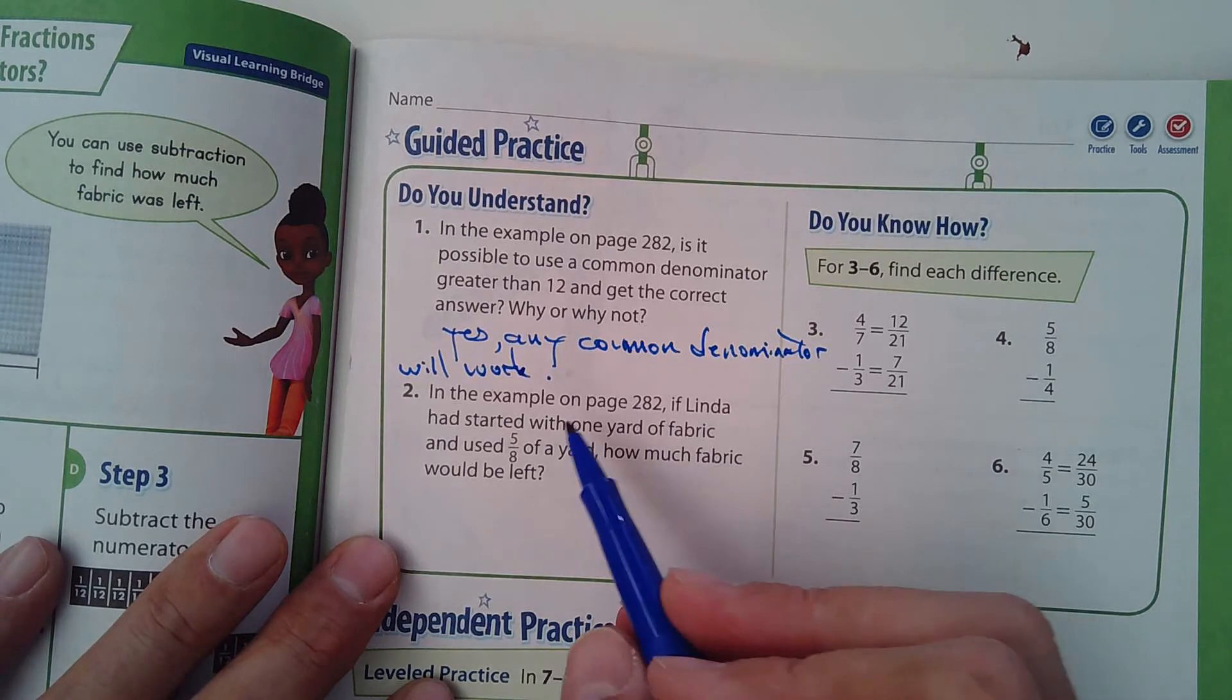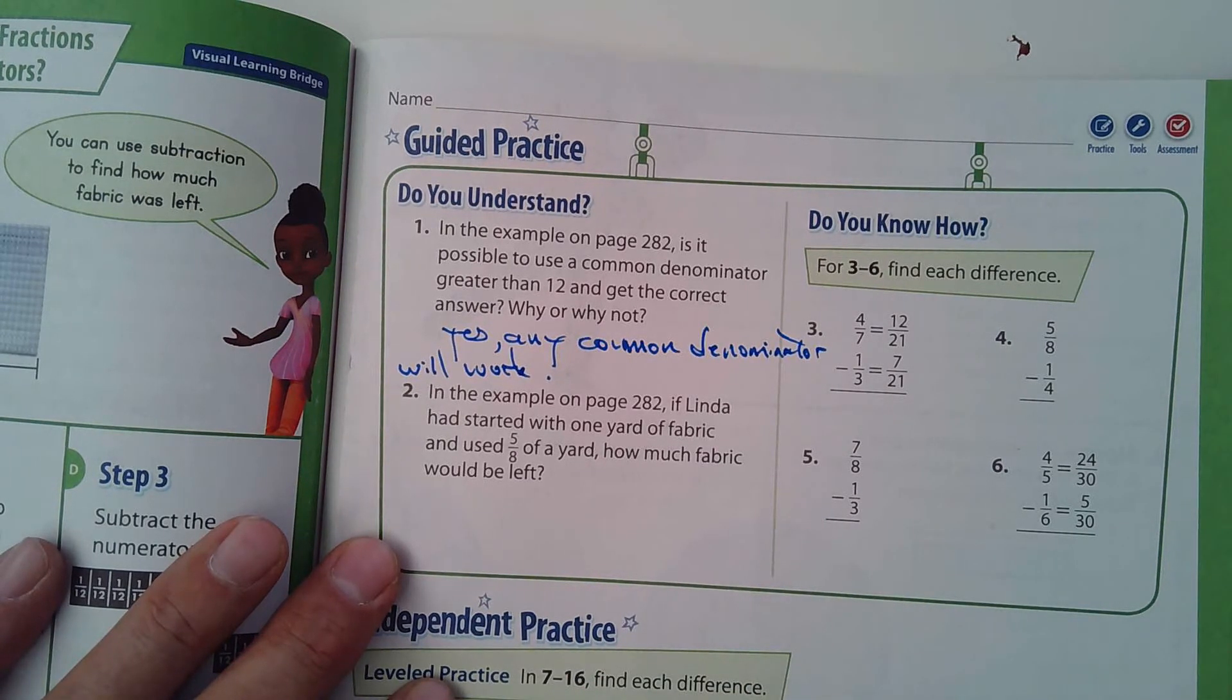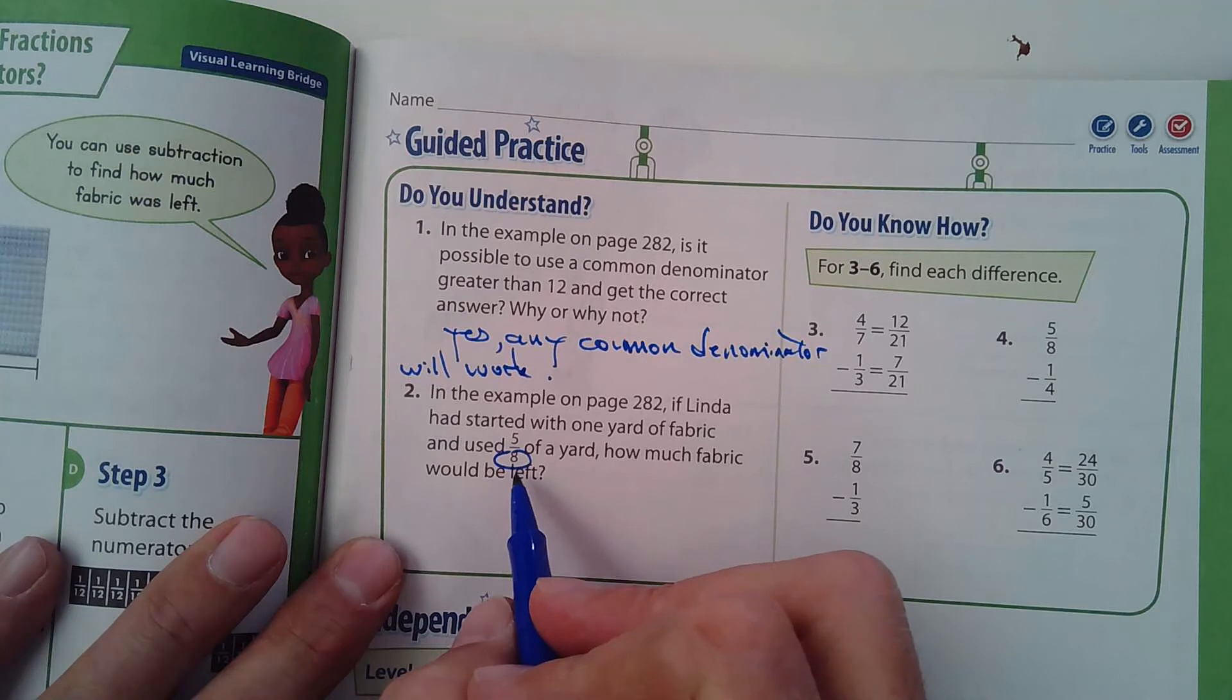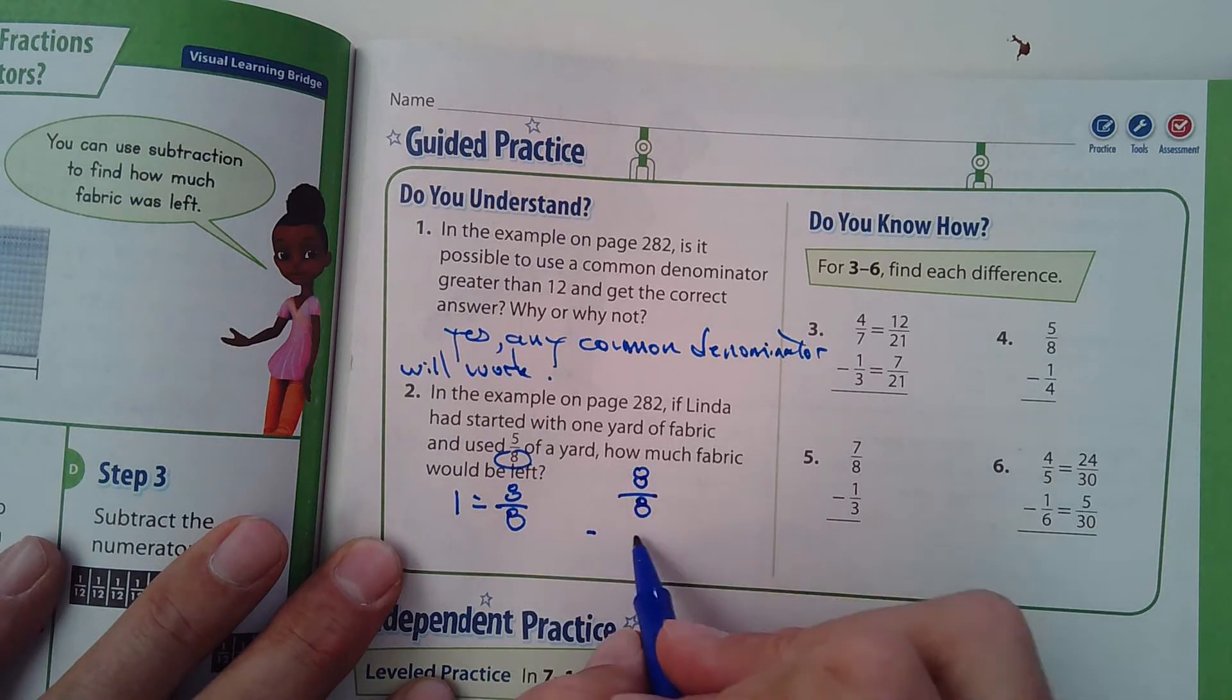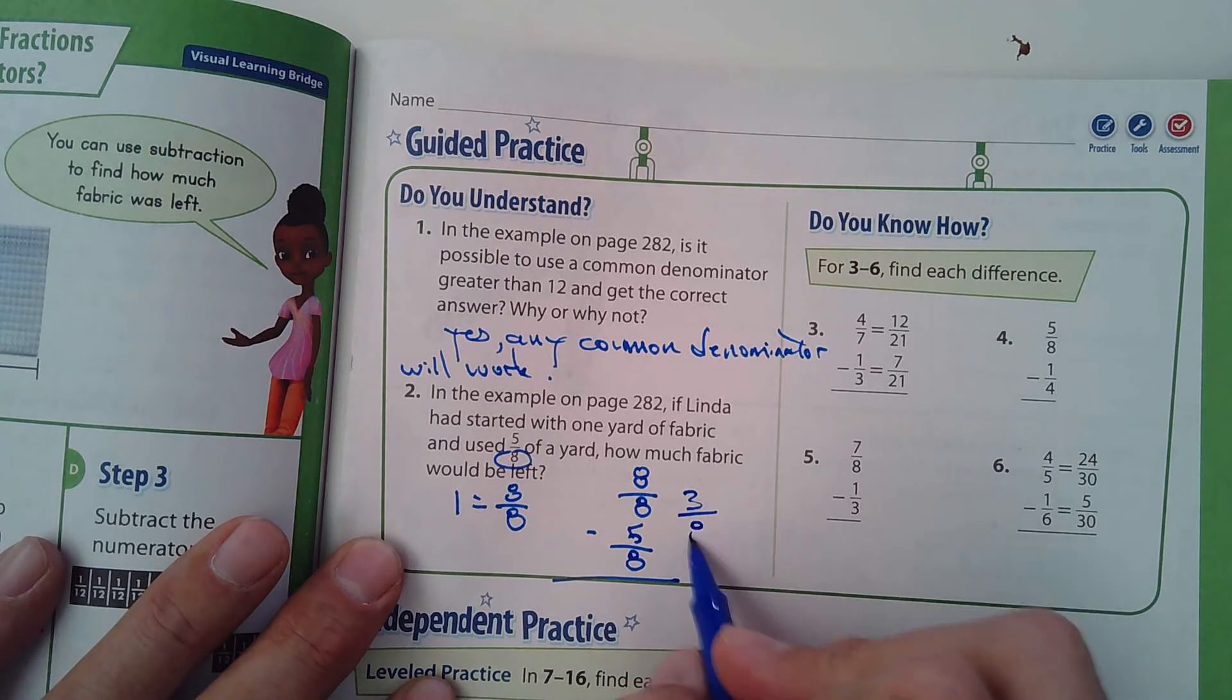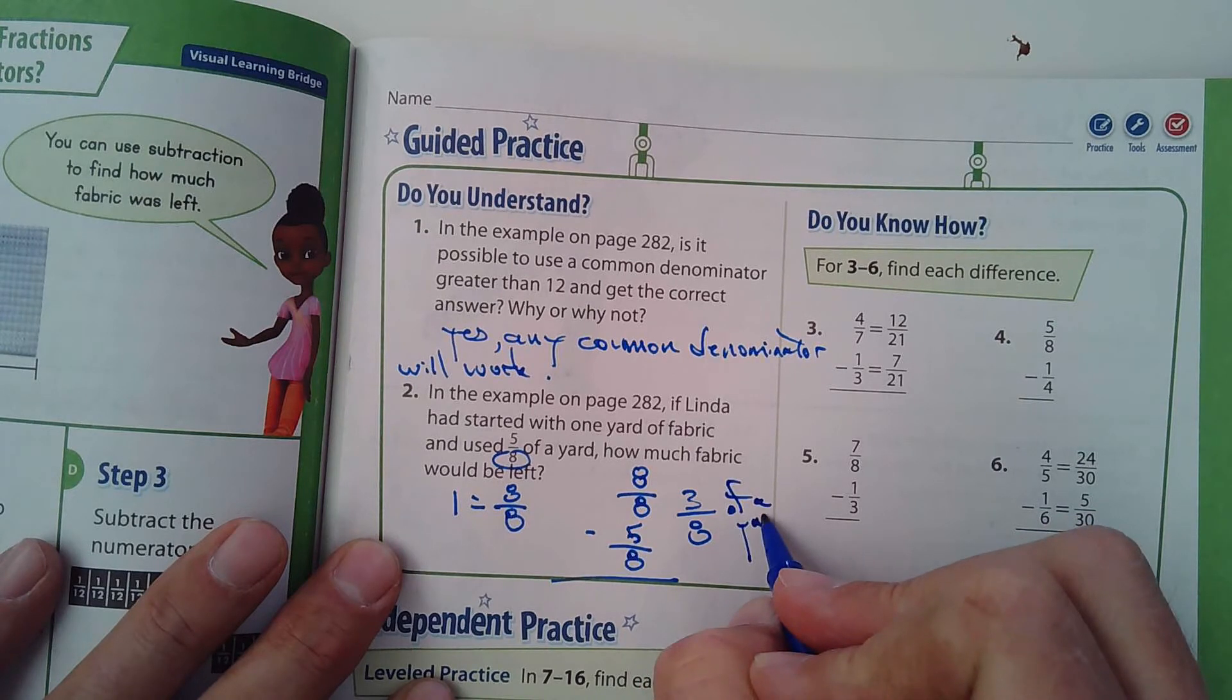And the example on page 282, if Linda had started with one yard of fabric and used five-eighths of a yard, how much fabric would be left? Well, so if the common denominator is eight, what would represent one? One would equal eight over eight. So what would we do? We'd simply, we could write it like this, eight over eight, and we're subtracting. What did she use? Five-eighths. Five from eight is what? Three-eighths. Three-eighths would be left. Or three-eighths of a yard.